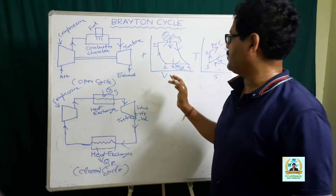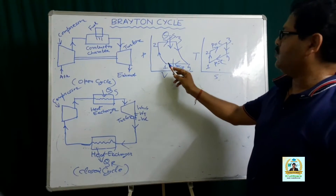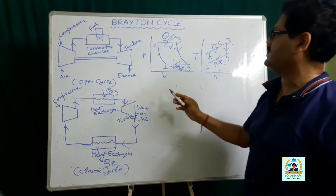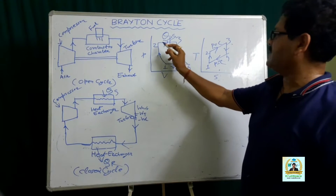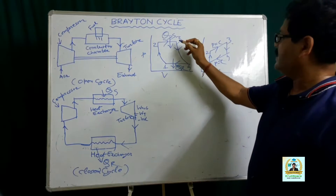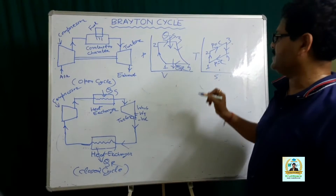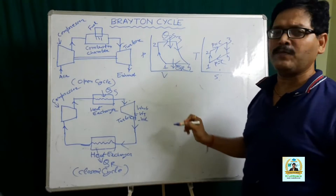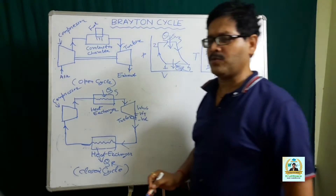You can see the four thermodynamic processes. Process 1-2 represents the isentropic compression process, 2-3 represents the constant pressure heat addition process, 3-4 represents the isentropic expansion process, and 4-1 represents the constant pressure heat ejection process.